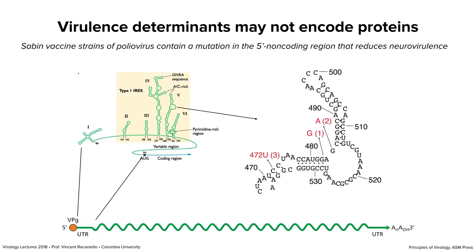Viral virulence genes don't have to encode proteins. We learned from studying poliovirus that non-coding regions can be involved in virulence. Here's the genome of poliovirus — a plus-strand RNA, seven and a half kilobases long, with a non-coding region at either end. Non-coding means it doesn't encode protein and isn't translated. At the five-prime end is a non-coding region that is highly folded to form the internal ribosome entry site, which allows translation independent of a cap.